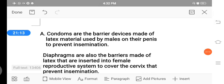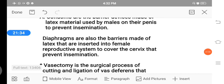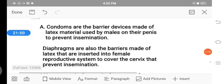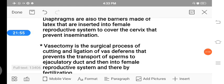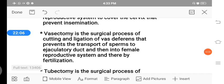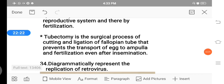The one is condoms or contraceptives are barrier devices made up of latex material used by males on their penis to prevent insemination, to prevent the fusion of sperm into egg. Then diaphragms are also barriers made up of latex that are inserted into the female reproductive system to cover the cervix to prevent insemination. These are the devices. Next is vasectomy. The two barrier methods are condoms and diaphragms. The two surgical methods are vasectomy. It is a surgical process of cutting and ligation of vas deferens. We are going to cut the vas deferens because that prevents the transport of sperm into the ejaculatory duct and then into the female reproductive system. In that, they prevent fertilization.